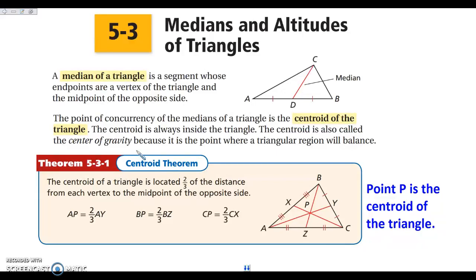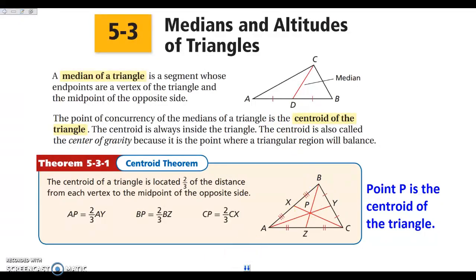Our theorem for our centroid is that the distance from the vertex of the triangle to the centroid is two-thirds of the length of the entire median. So if this is two-thirds of the length, then that makes this one-third of the length.